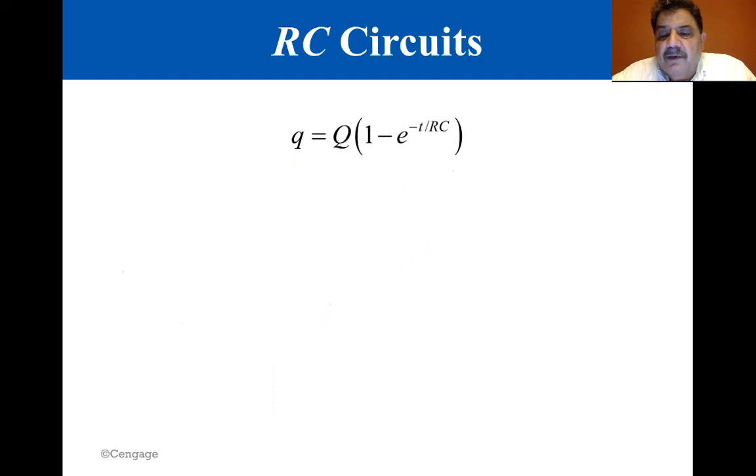In this model, it would take an infinite amount of time for the capacitor to become fully charged. The reason is mathematical. In obtaining that equation, charges are assumed to be infinitely small. But in reality, the smallest charge is that of an electron with a magnitude equal to 1.6 times 10 to the minus 19 coulombs. For all practical purposes, the capacitor is fully charged after a finite amount of time.